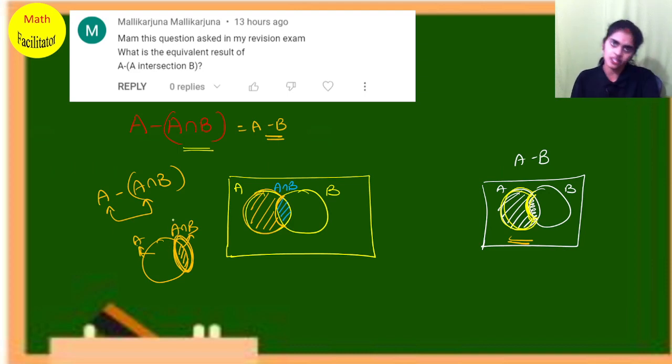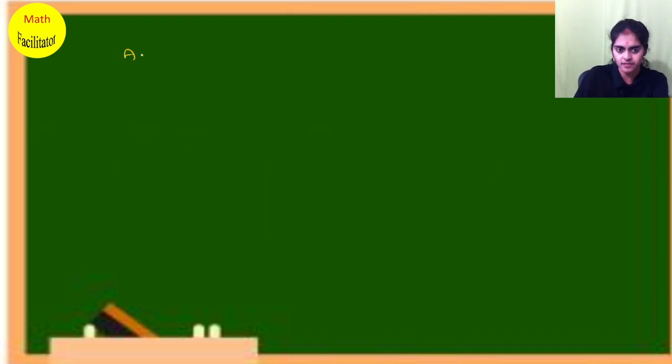Let me take an example without Venn diagram. If A is {1, 2, 3, 4, 5} and B is {1, 2, 3, 6}, what is A intersection B? The common elements are {1, 2, 3}.